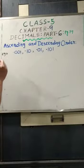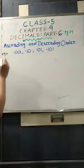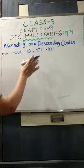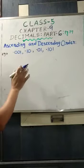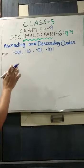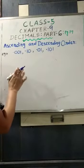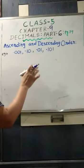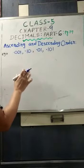For example, I have written 4 decimal numbers, and these 4 decimal numbers we will have to arrange in ascending order — that means from smaller to bigger order. Our arranging of numbers will be easier if we write all the numbers with the same number of digits after the decimal point. This is important.